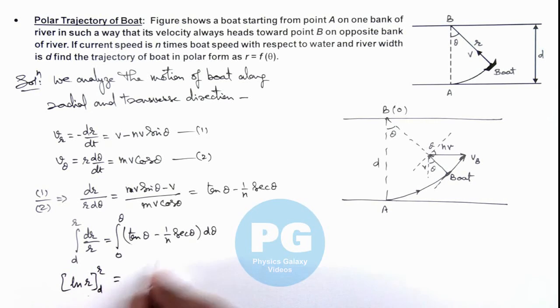On the right hand side, when we integrate, integration of tan theta is minus ln of cosine theta minus 1 by n ln of sec theta plus tan theta, which is integration of sec theta, and we apply limits from zero to theta.